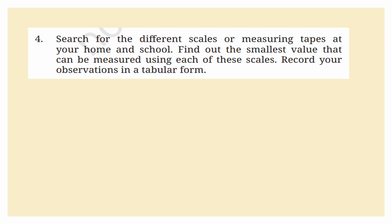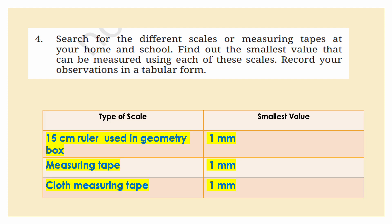Search for different scales or measuring tapes at your home and school. Find out the smallest value that can be measured using each scale and record your observations in a tabular form. A 15 cm ruler from your geometry box can measure a smallest value of 1 millimeter. A measuring tape also has a smallest value of 1 millimeter.